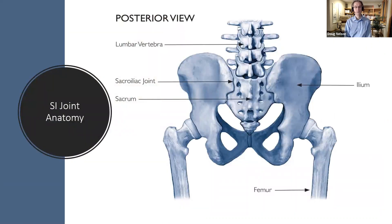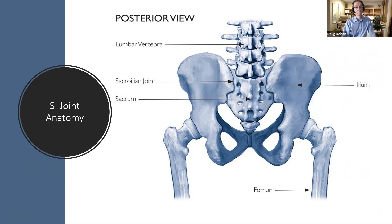The first thing we're going to deal with in the seminar in terms of the hands-on will be looking at the SI joint itself. Focus on the anatomy — the connection between the innominate and the sacrum. In the picture, what you see is the posterior SI joint, but there is also an anterior SI joint in the front. They each have different symptoms and different reasons for the same kind of symptoms, so we'll look at both hypo and hypermobility in the SI joint itself.